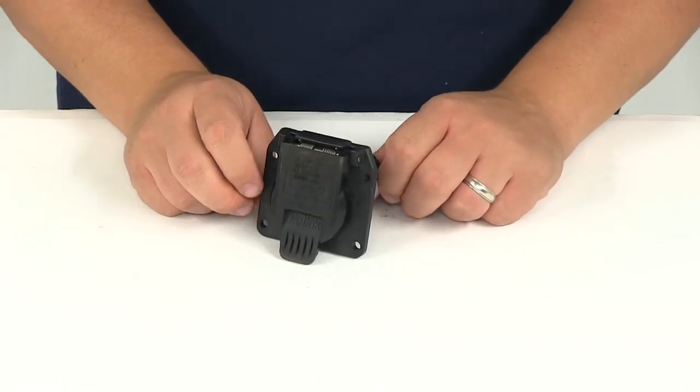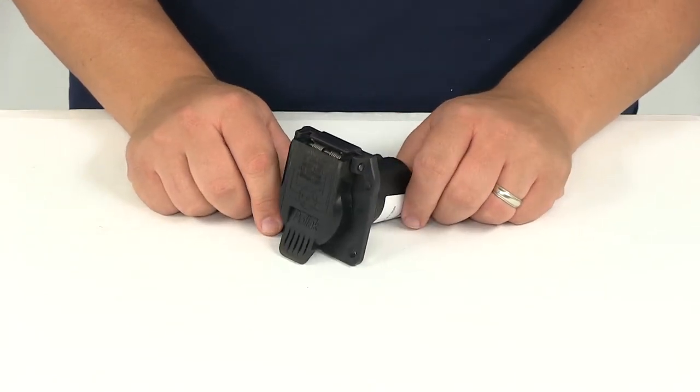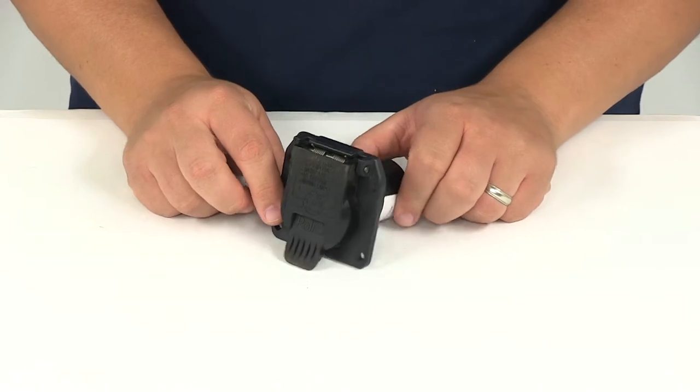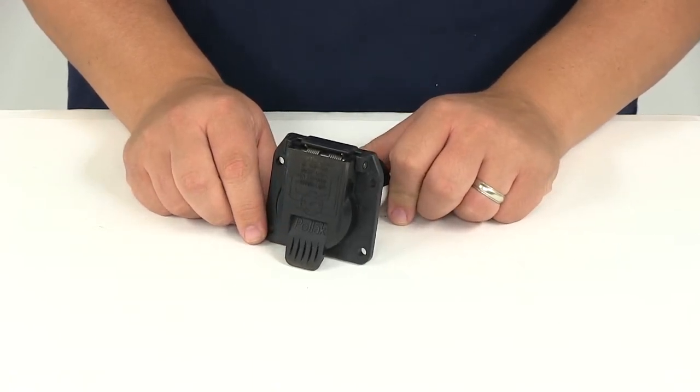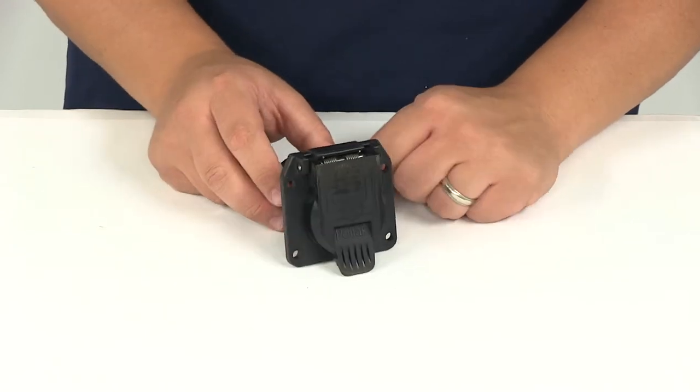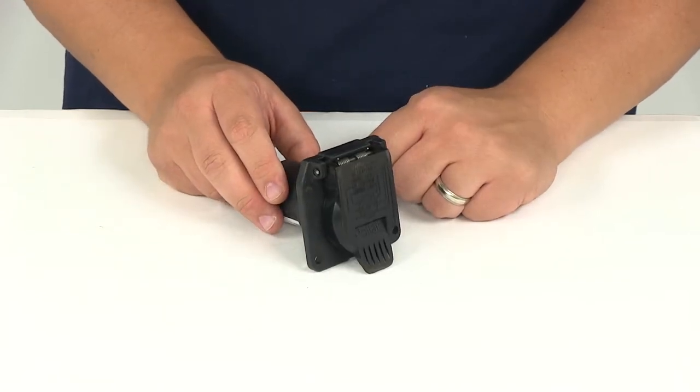Mounting bracket and hardware are available at eTrailer.com but are sold separately. This is designed for Ford, Chevy, GMC, and Nissan OEM sockets. It has a current rating of 30 amps with a volt rating of 12 volts.